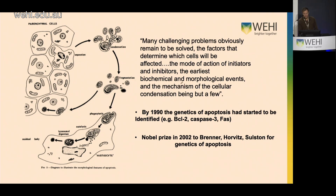By 1990, scientists had started to unravel the genetics of apoptosis. Critical players had been identified such as BCL2 and caspase 3. In 2002, the Nobel Prize was given to Brenner, Horvitz, and Sulston, who first characterized key cell death effectors in worms and then showed they were conserved in mammals.